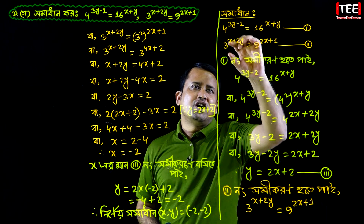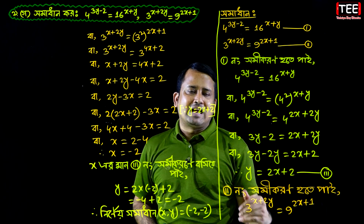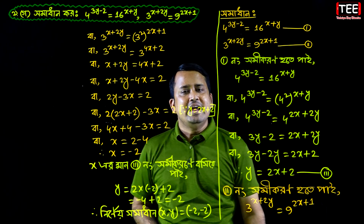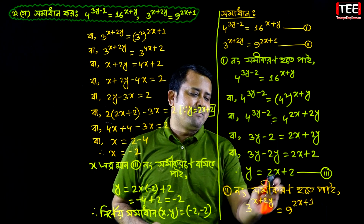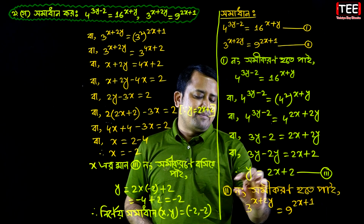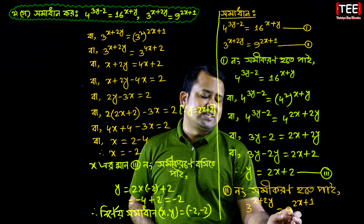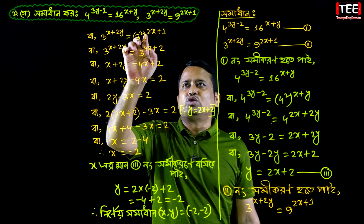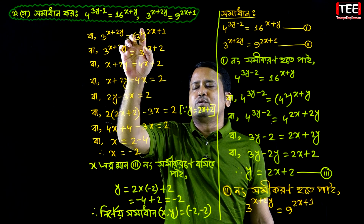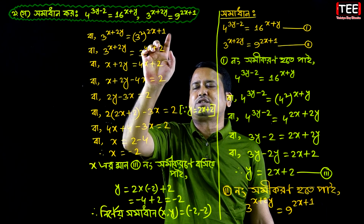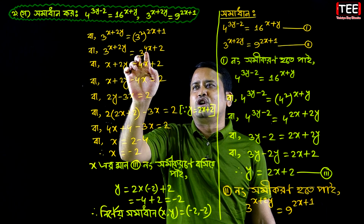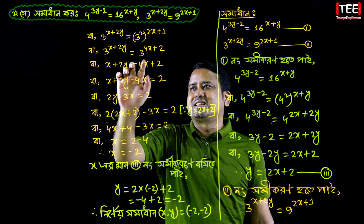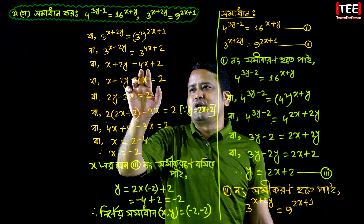Now looking at the solution again: we wrote the two simultaneous equations. We can write 9 as 3 squared, 3 squared, 3 squared — meaning 9. So 2x equals 2, then the power equals 2, and after subtracting we get the power equals 4.